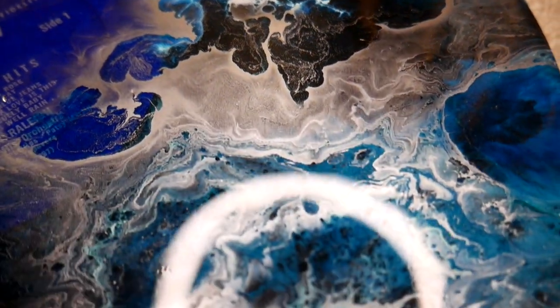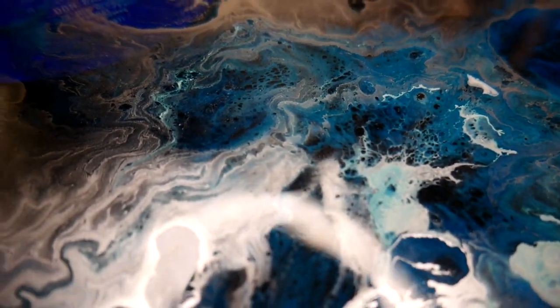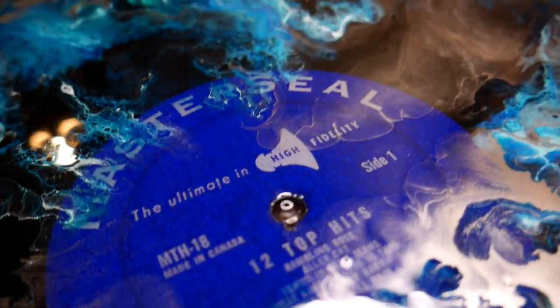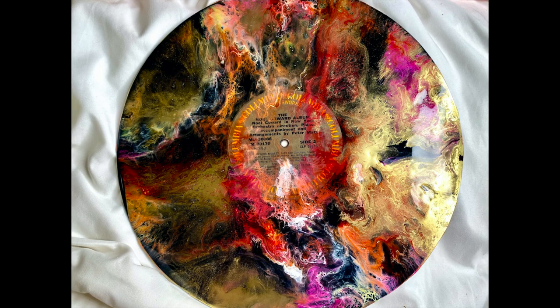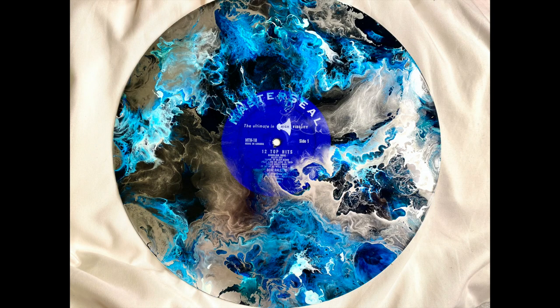It's kind of hard to do a tutorial with this just because I really go by feeling. I just feel it out. Where is a section that needs more color? Where does it need to be moved more? As you start to work with alcohol inks and resin, you'll just get the feel for it, I know you will. Also, all the supplies will be linked in the description below if you want to use what I used in this video. For the records, I just thrifted them. You can find records for a couple dollars that are scratched and can't be used anyways.